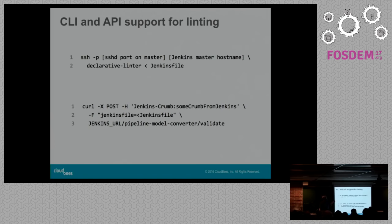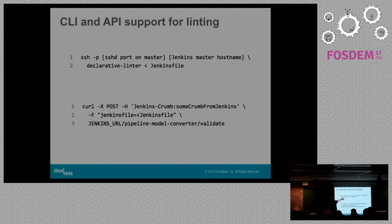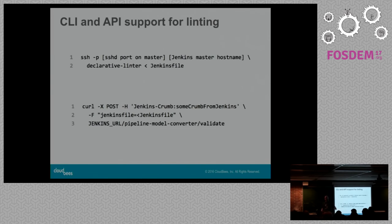You can also do this linting without actually running the build. The recommended way is using the Jenkins SSH CLI — you SSH into the master, call the declarative linter command, and pipe in the Jenkinsfile. It gives you the same error messages as running it in a build. You can also do this via the REST API with cURL — the cURL command uses Jenkins crumbs since you really should have crumb protection enabled on your master, which is a good security practice.